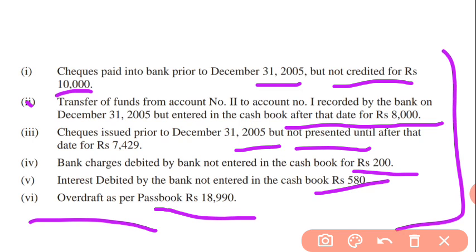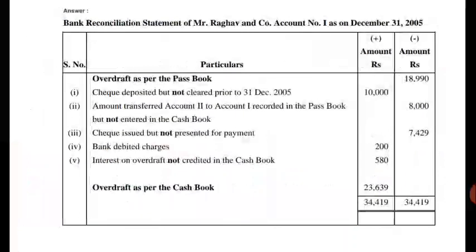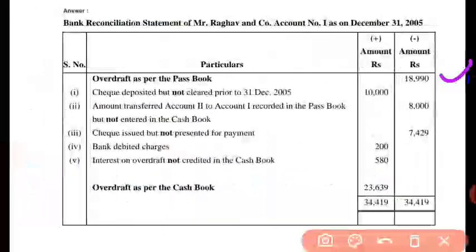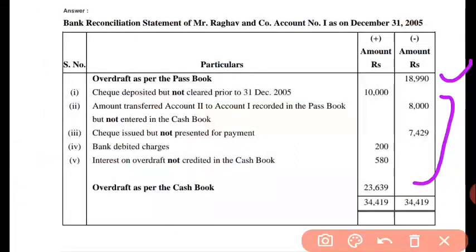So the question is totally opposite — it is given according to pass book. So we have to start now. Firstly we will write overdraft as per pass book. Whenever we prepare the bank reconciliation statement starting from the pass book, all entries recorded as plus items according to the cash book will transfer to minus. First adjustment: cheque deposited but not cleared — that is a minus item as per cash book, so here we will write it as a plus item.